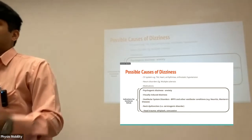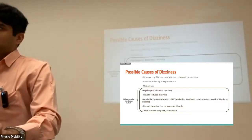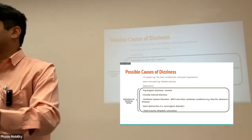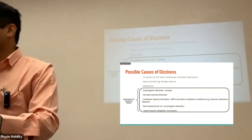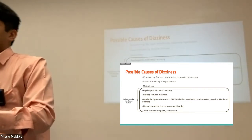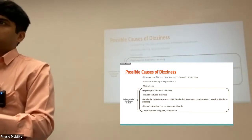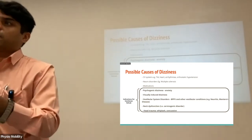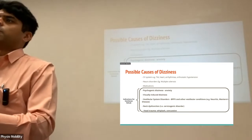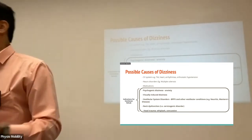Tinnitus is also a symptom of vestibular dysfunction. Vestibular dysfunction is the common link — tinnitus is one symptom, vertigo is another symptom. Which is basically what makes me think you've actually had vestibular dysfunction for a while, and now the vertigo is only just coming on.